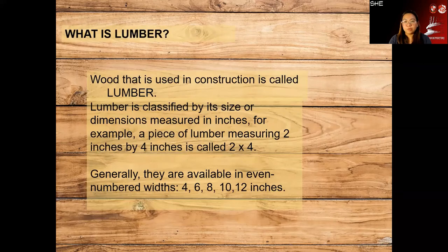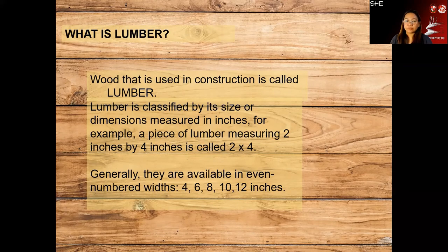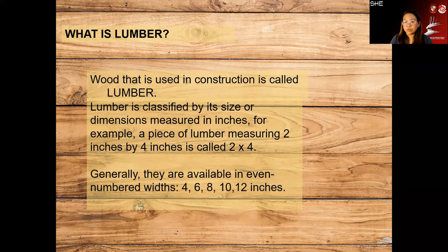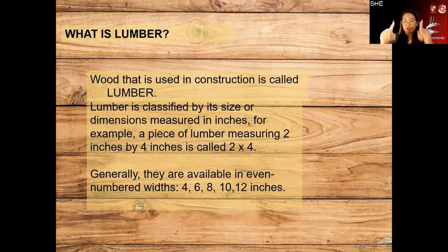What is lumber? These are wood pieces used in construction. Lumber is classified by its size or dimension measured in inches. For example, a piece of lumber measuring 2 inches by 4 inches is called a 2 by 4 — that refers to its cross-section.